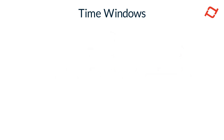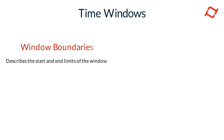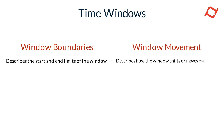There are two primary attributes that can be used to describe a time window: window boundaries, which describe the start and end limits of the time window, and window movement, which describes how the time window shifts or moves over time.